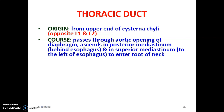In the posterior mediastinum, the thoracic duct is behind the esophagus. As it reaches the superior mediastinum, it moves to the left of the esophagus and then enters the root of the neck. It crosses from the right to the left side at the sternal angle of Louis — the T4-T5 junction — before terminating by emptying into the left brachiocephalic vein. This plane also divides the mediastinum into superior and inferior mediastinum.